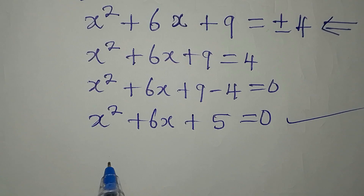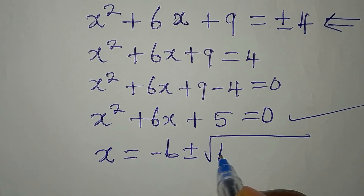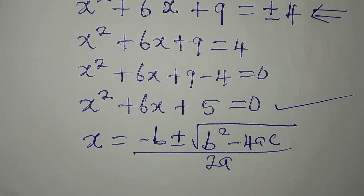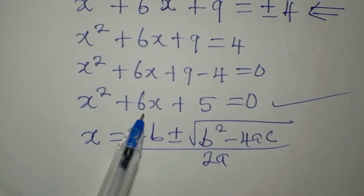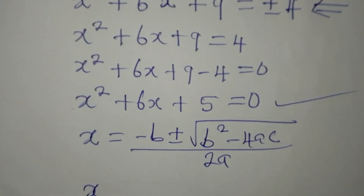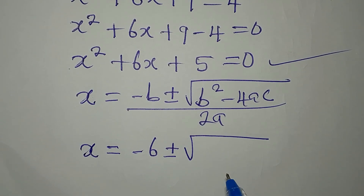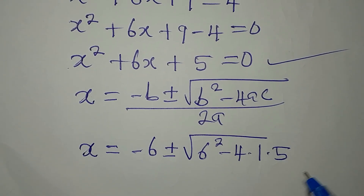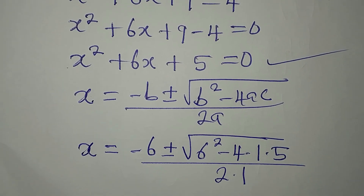This is a quadratic equation, so we use the quadratic formula: x equals negative b plus or minus the square root of b squared minus 4ac, all divided by 2a. From our equation, a is 1 (the coefficient of x squared), b is 6, and c is 5. Substituting: x equals negative 6 plus or minus the square root of 6 squared minus 4 times 1 times 5, divided by 2 times 1.